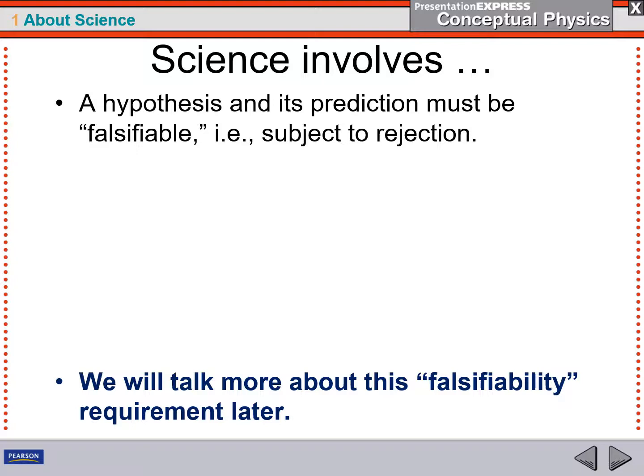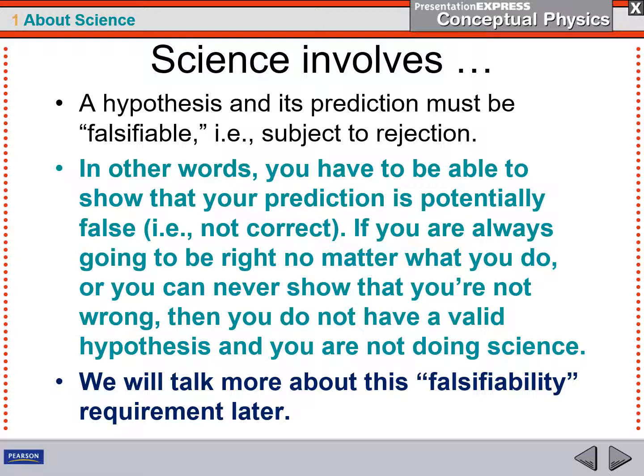A hypothesis has certain characteristics. It has to have a prediction that is potentially falsifiable, subject to rejection. In other words, you have to be able to show that you're potentially wrong. Now, of course, you want to be able to show that you're potentially right. But it has to be potentially false or else it's not really science.